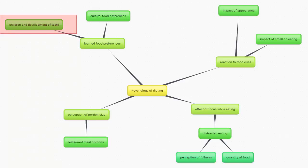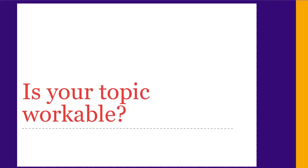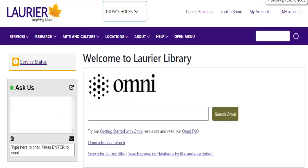In this example, I'll pick how children learn to like certain tastes. Now that you have a topic, you need to be sure it's a good one. One important criteria is whether it's workable — is there enough information out there that you can write a paper? The best way to make sure your topic is workable is to do a quick search for articles in a library database for psychology.